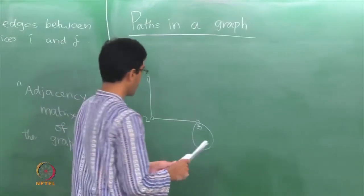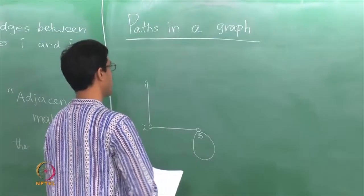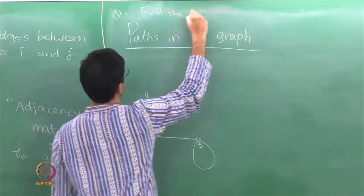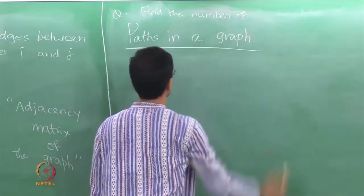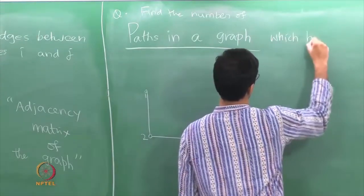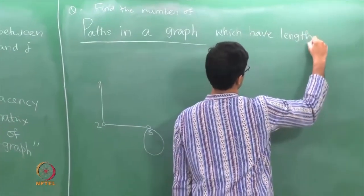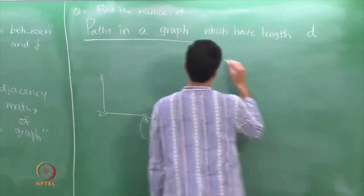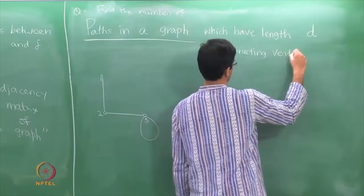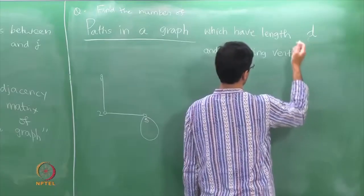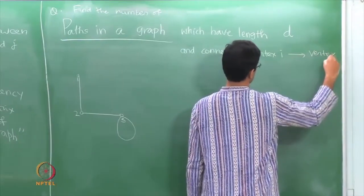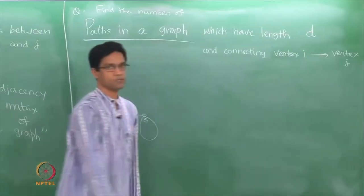Or consider a path of length 3: go from 1 to 2, then to 3, and then follow the loop at 3 — here is a path which gets me from 1 to 3 in 3 steps. The notion of a path itself is intuitive. What we want to do therefore is to count paths: find the number of paths in a graph of a given length d which connect a vertex i to a vertex j.